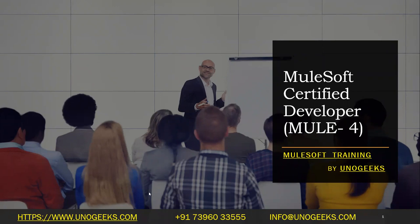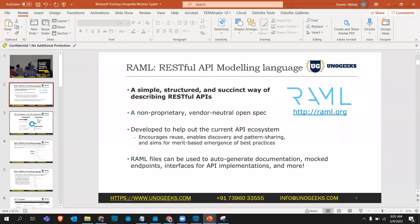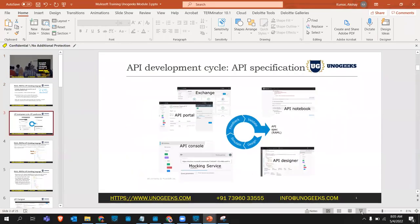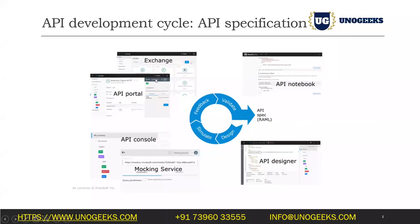We'll start with the topic, which is a RAML spec definition, which we were talking about yesterday. Let us go through the list diagram once again and recall things where we had left off. Before doing any basic implementation in MuleSoft, we design an API spec in API Designer, do the simulation, get the feedback and validate, and we get the RAML.